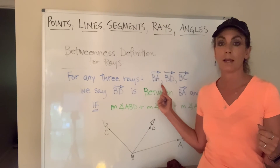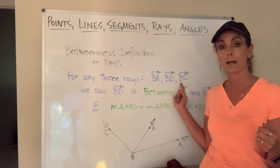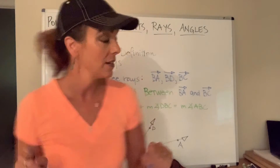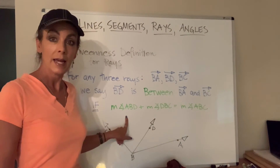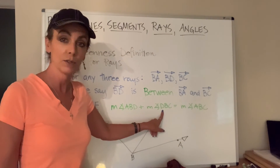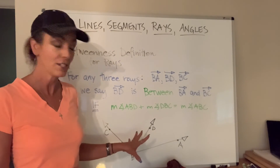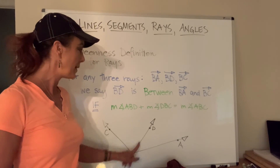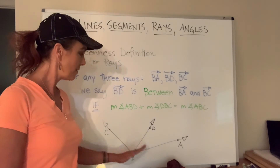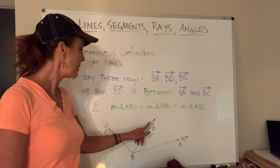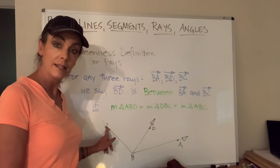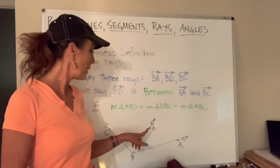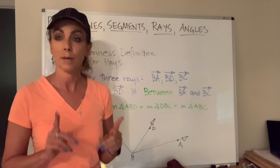Let's say I've got three rays: ray BA, BD, and BC. I can say that ray BD is between rays BA and BC if the measure of angle ABD plus the measure of angle DBC is equal to the measure of angle ABC. Here are the rays: BA, BC, and BD. So we can say that ray BD is between BA and BC if that angle addition condition holds. That would imply that D is on the interior of angle ABC, and then we're back to the angle addition postulate.